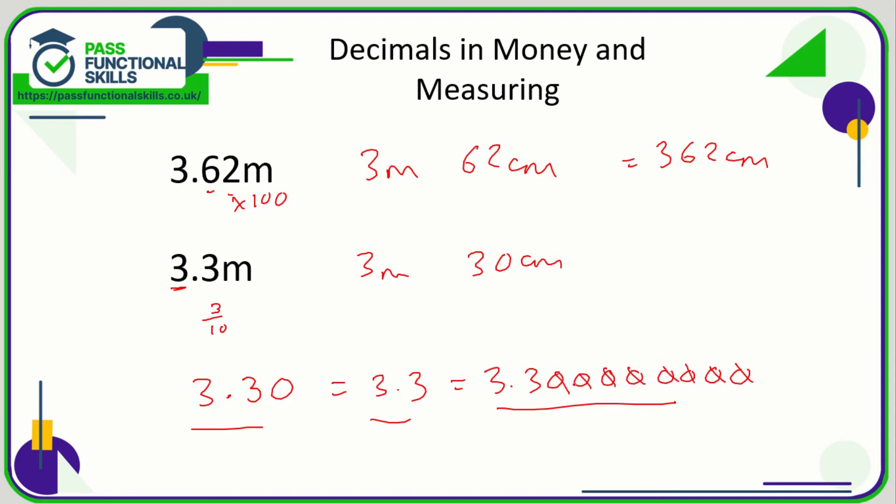But the difference with money is that when we're writing pounds and pence, we would definitely always include two decimal places. But with measurements, we can say 3.3 meters, but we just need to remember that that is 3 meters and 30 centimeters and not 3 meters and 3 centimeters, because 3 meters and 3 centimeters would be 3.03. And again, if we want to convert this into centimeters, then we just need to multiply 3.3 by 100 because there's 100 centimeters in a meter. 3.3 times 100 is 330 centimeters.